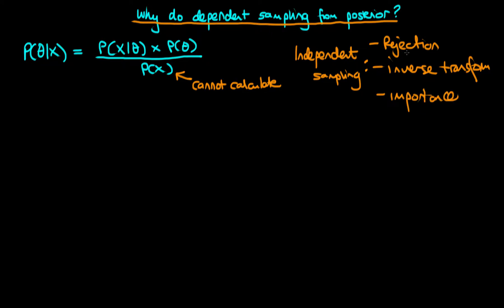These are all ways that are useful in some aspects of probability theory, but it turns out in Bayesian inference that each of these three methods isn't actually that useful for doing inference. The problem with rejection sampling is that whilst it works okay in one dimension, it's very inefficient when you move to higher dimensions. In particular, as you scale to higher dimensions the inefficiency scales exponentially, so that's not a method that avoids the curse of dimensionality.